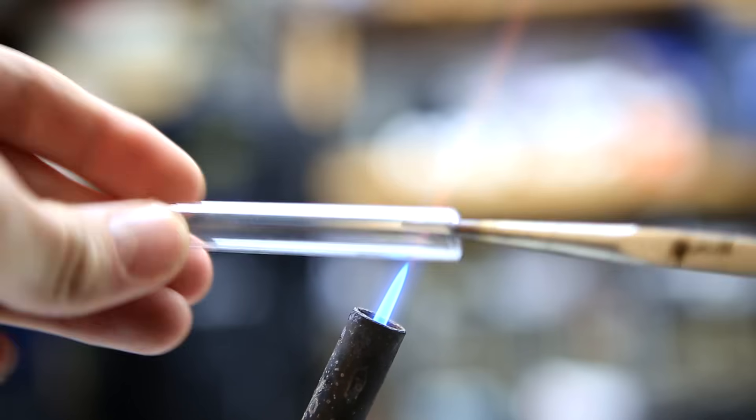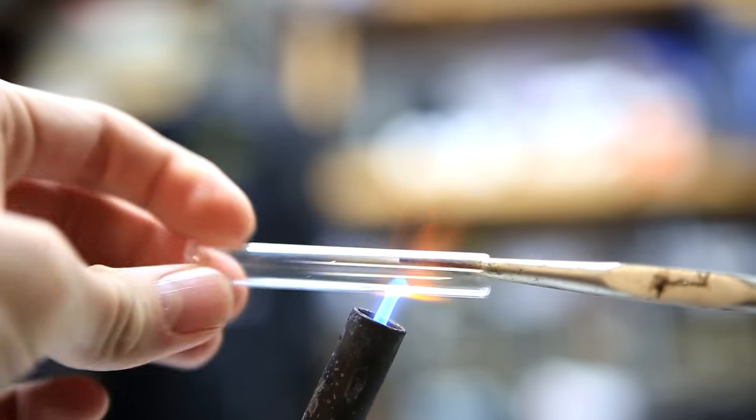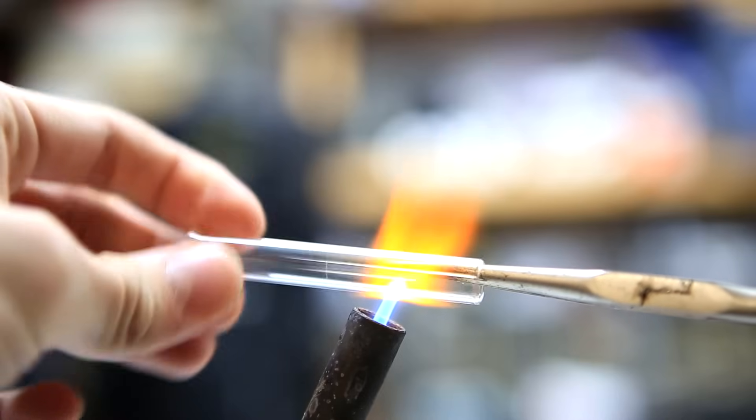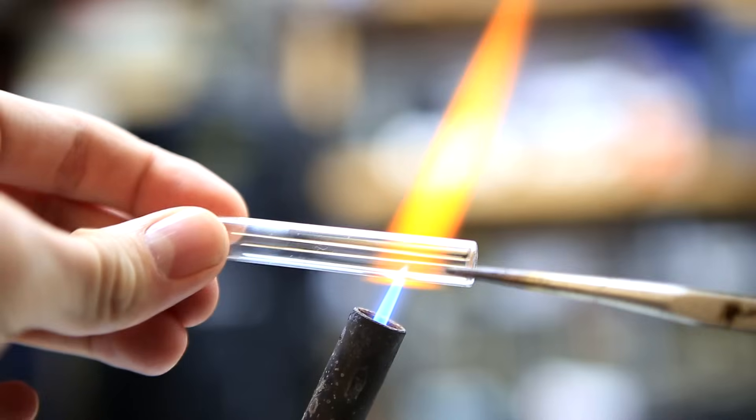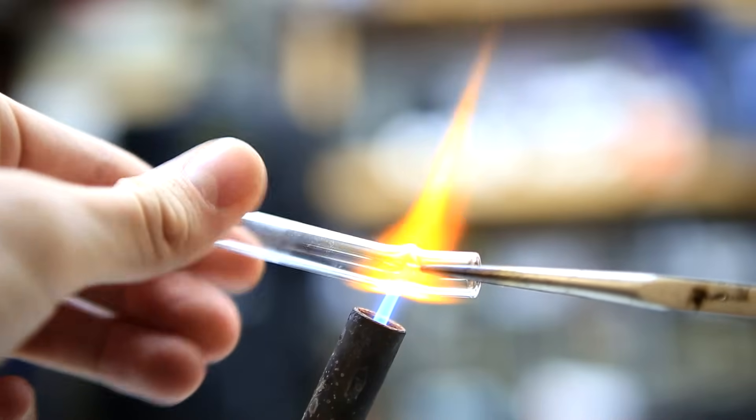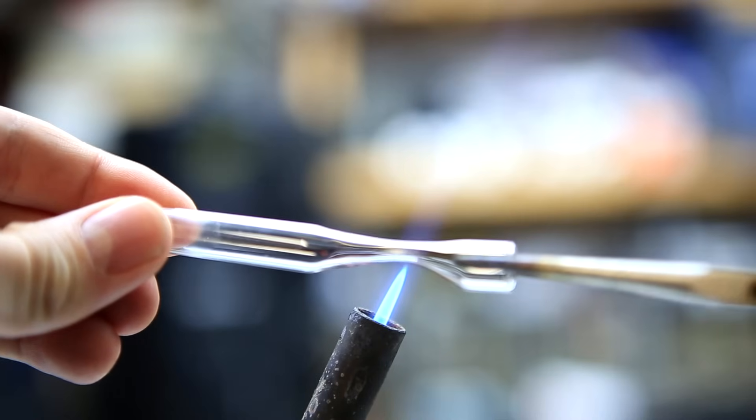This next part is just like in the previous video where the test tube is heated and then pulled. Even if you're making an ampoule out of a larger test tube, you're going to want to pull it so that the neck of the ampoule is about the same width as this. Ideally, the neck is as thin as possible where you're still able to get your chemical inside.